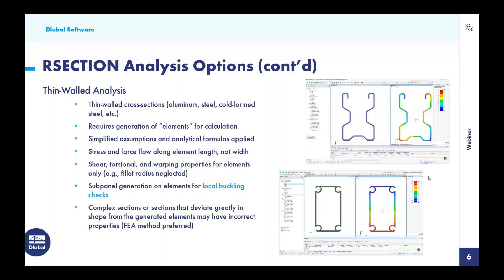This next point I really wanted to emphasize. When we generate these elements with the thin-walled analysis and bring it into RFEM for the full analysis and design, we are able to carry out local buckling checks of these custom cross-sections according to the ADM standard, the AISI, and the CSA standards. This is very unique to R Section in comparison to competitor programs. However, there may be limitations with the thin-walled analysis. If we have very complex sections that deviate greatly from the generated elements, we may be incorrectly calculating shear, torsional, and warping properties. In that case, we would want to move to the FEA method.